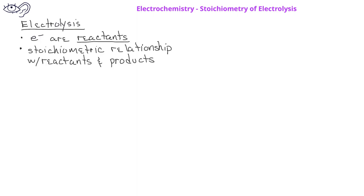In electrolytic cells, electrons are reactants and have stoichiometric relationships with the reactants and products in the half-reaction. For example, in the familiar copper 2+ to copper half-reaction,